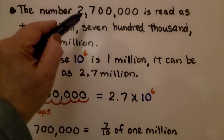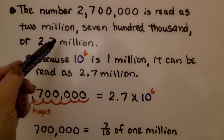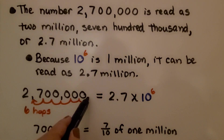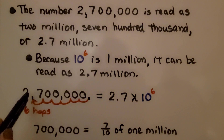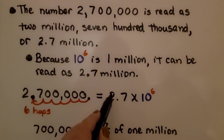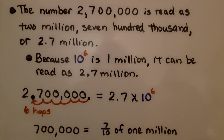The number 2,700,000 can be read as 2.7 million. Because 10 raised to the sixth power is 1 million, it can be read as 2 and 7 tenths million. The decimal point made six hops to give us 2.7 times 10 raised to the sixth power. The 700,000 is seven tenths of 1 million, which is how we get 2 and 7 tenths million.